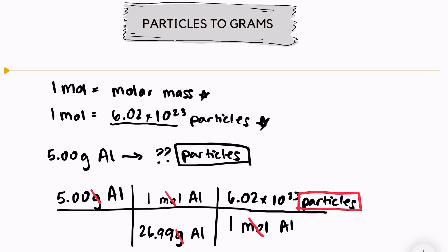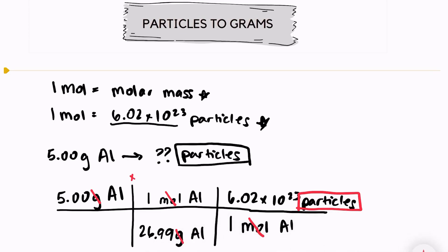We need to make sure that at the end we're left with the unit we are looking for. We multiply everything on top of our fraction and divide by everything on the bottom. In your calculator, you should have 5.00 times 6.02 times 10 to the 23rd, divided by 26.99, and you should get 1.12 times 10 to the 23rd particles of aluminum.